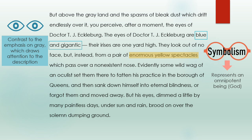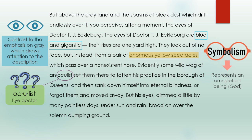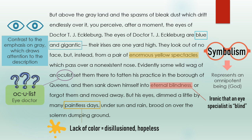Here's another word I don't know: 'oculist,' which means eye doctor. The narrator says that this oculist sank down into eternal blindness, which is ironic considering the fact that he's an eye specialist. Another striking image is the description of 'paintless days,' which makes the Valley of Ashes seem colorless, creating a sense of hopelessness and disillusionment.